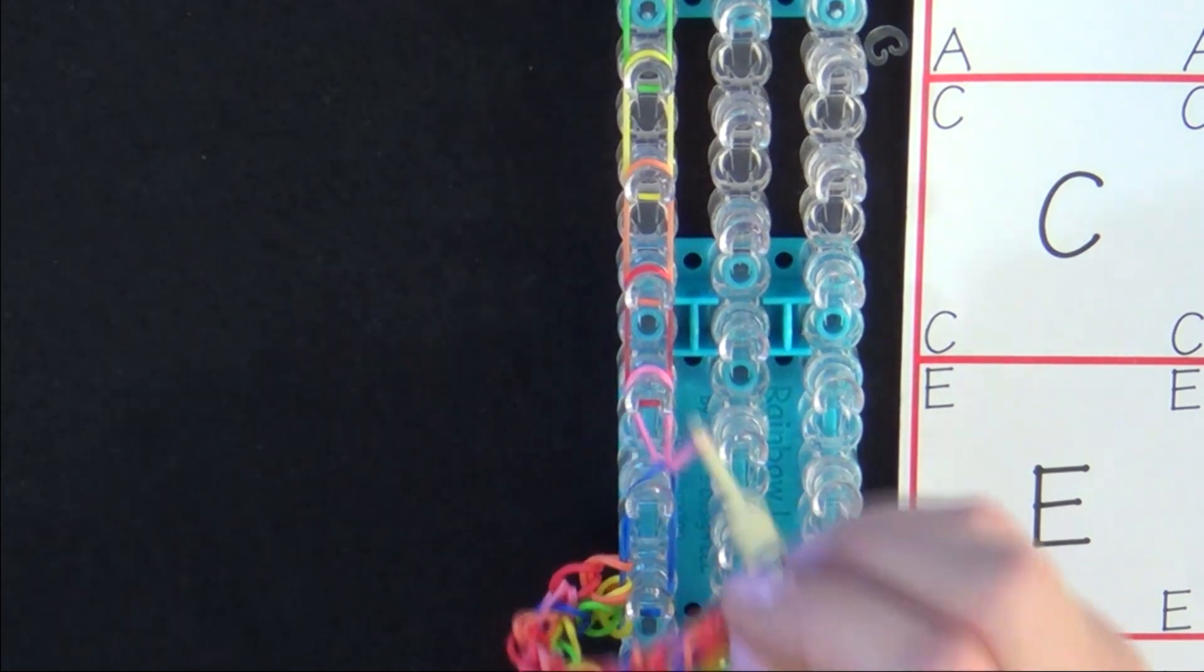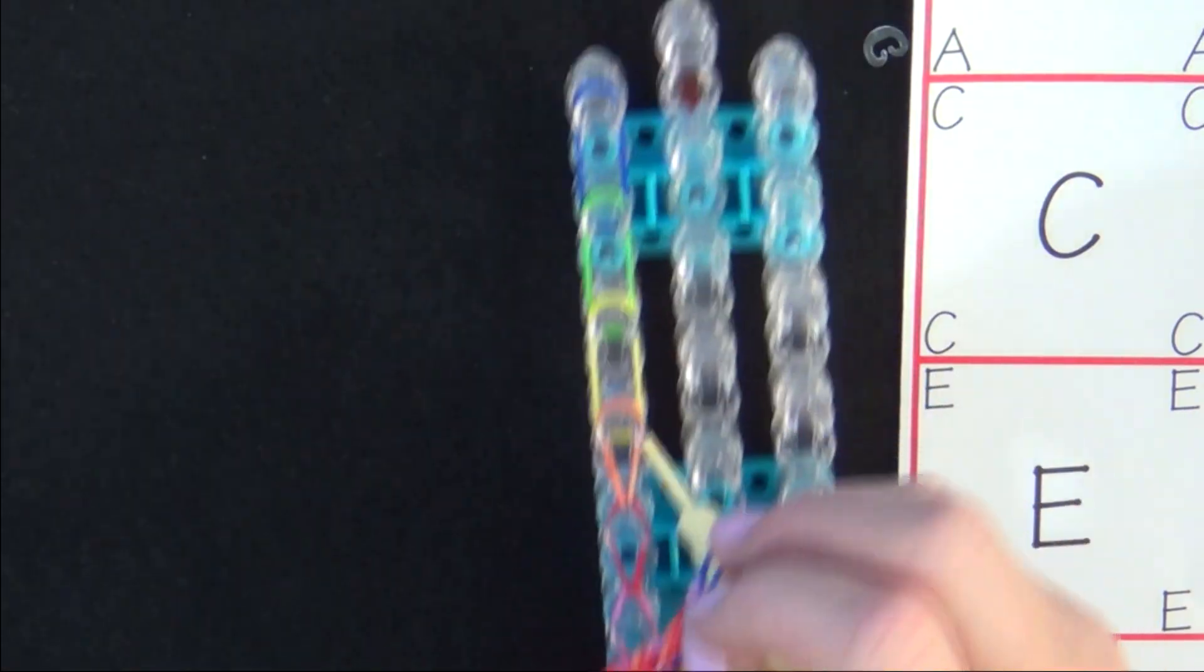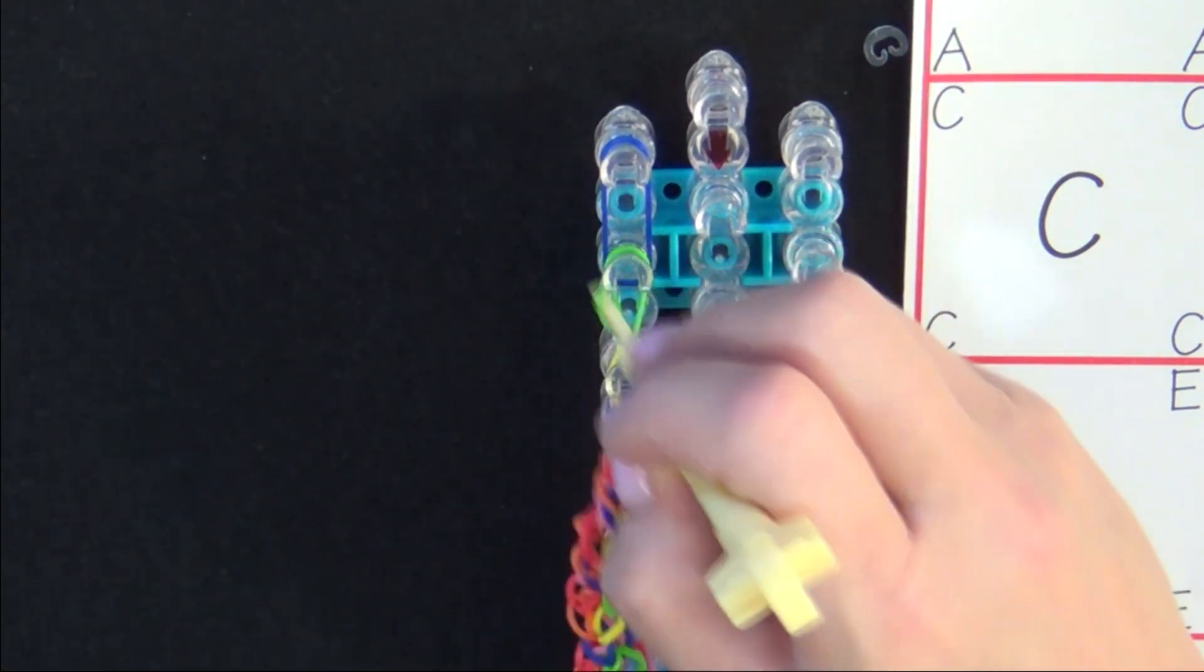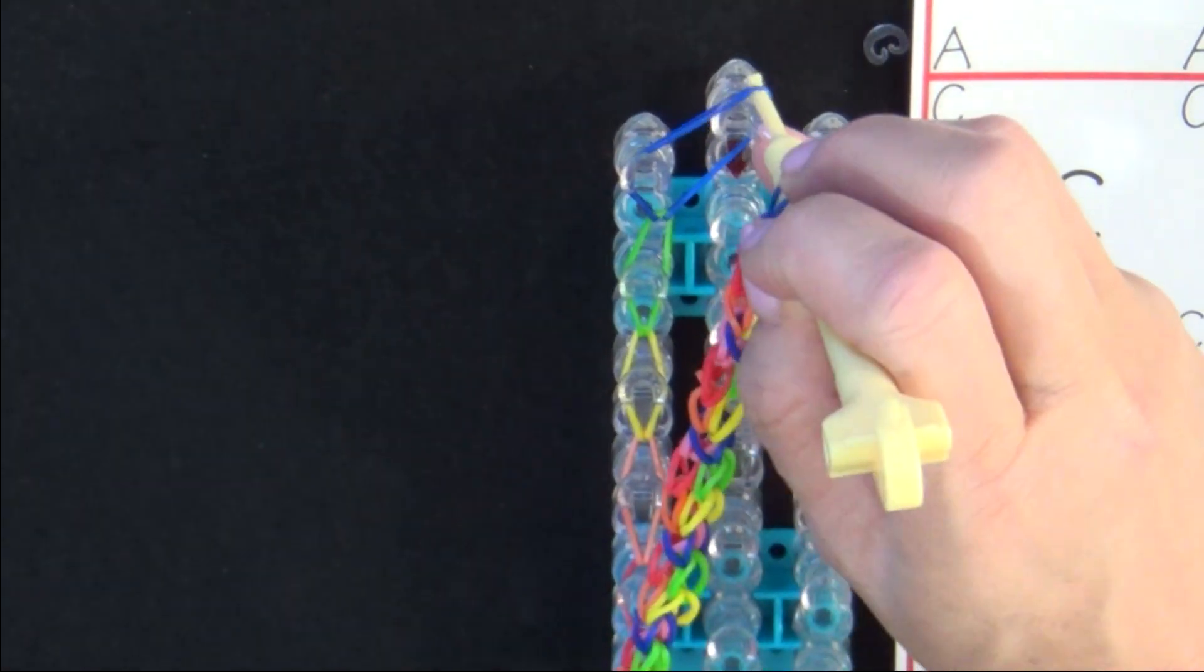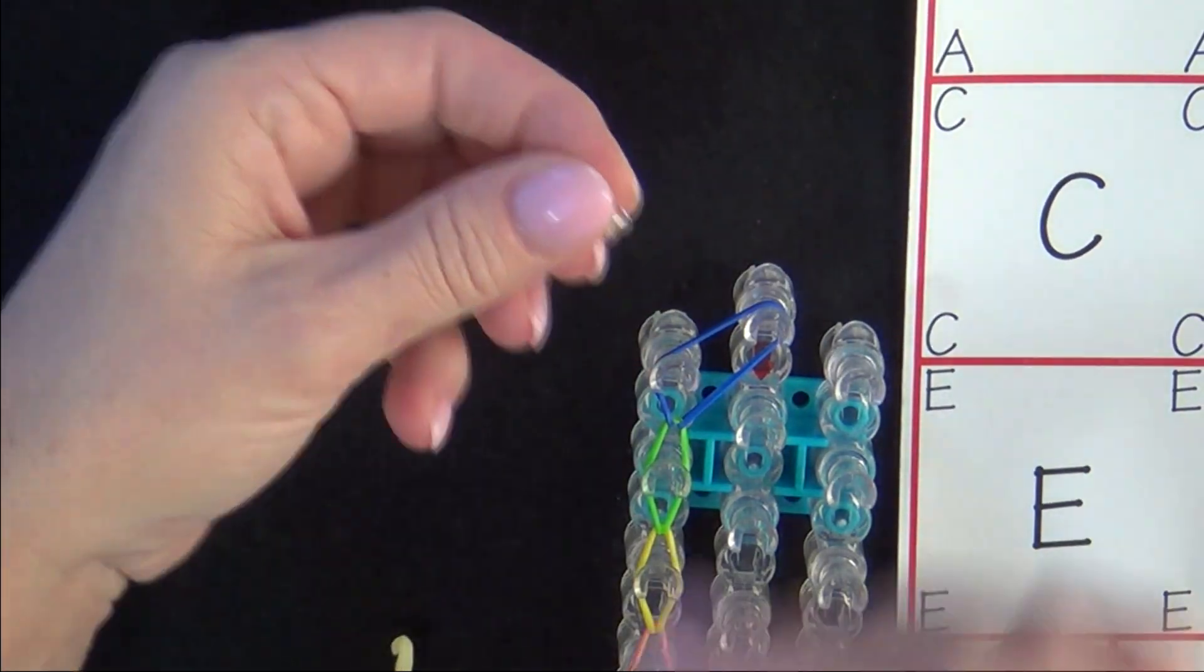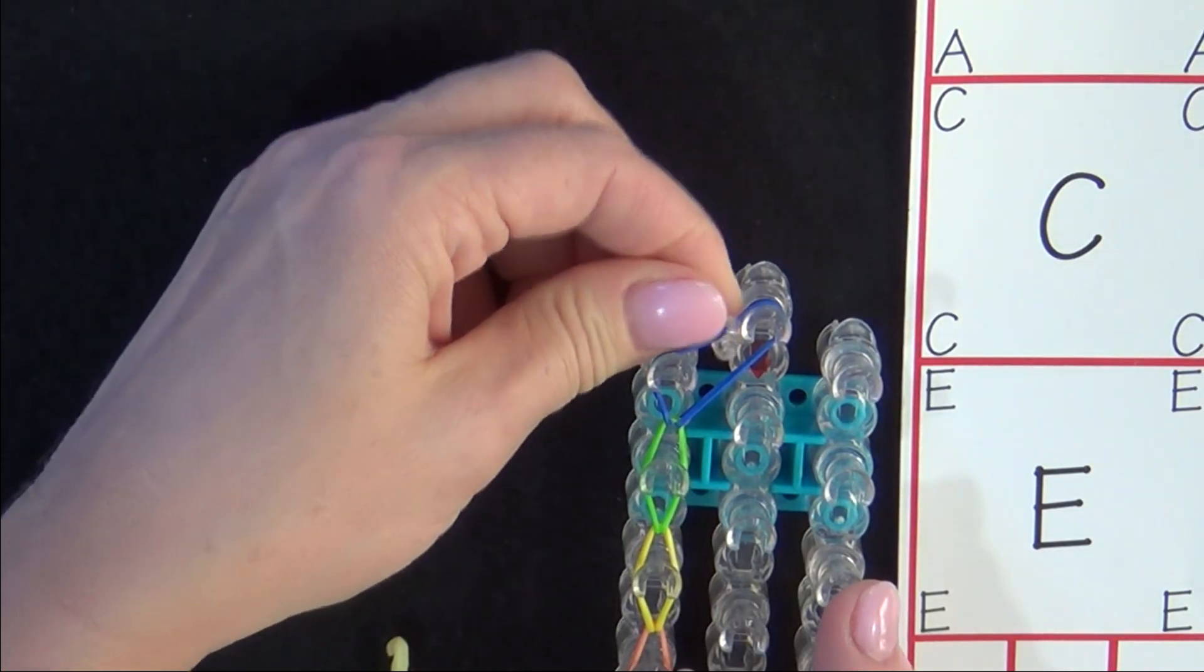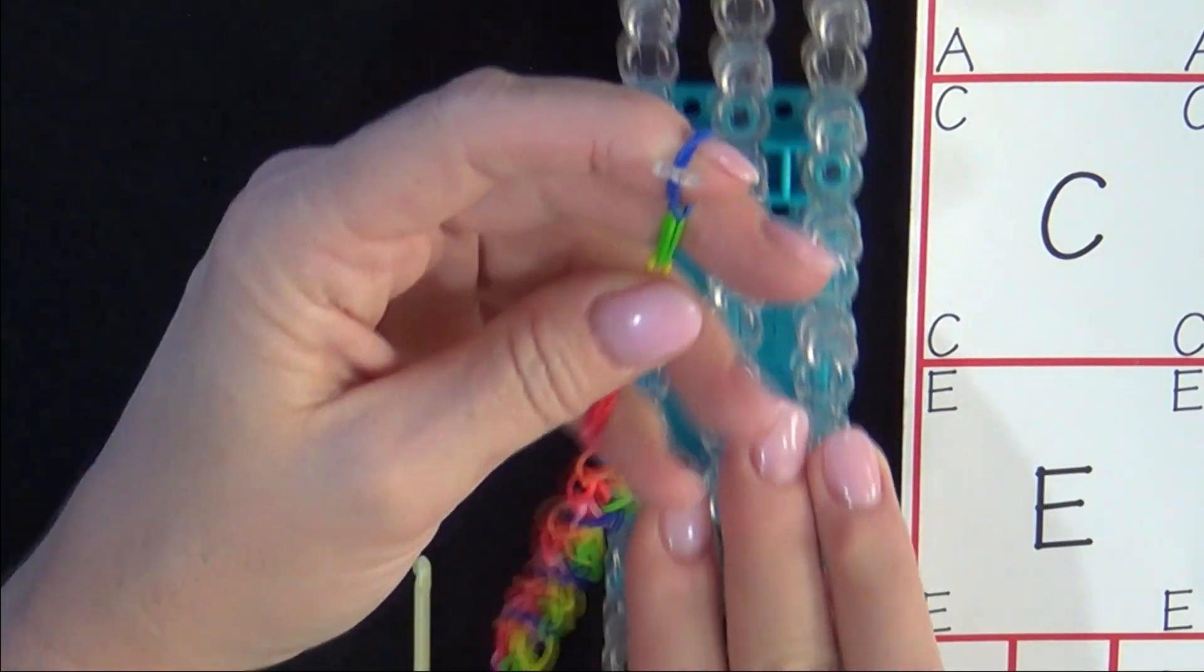Then we loop these bands. And once we reach the end of the loom here, we stretch this last one to the middle pin. This creates an area where you can attach your C-clip. You grab your C-clip and hold it with the open side facing forward and then snap that securely on your band. Then you can lift your extension from the loom.